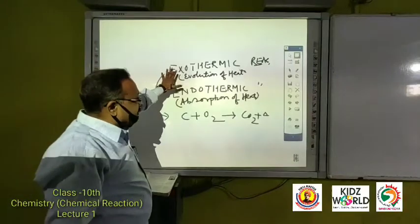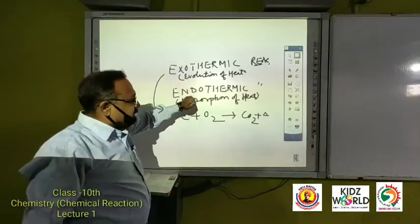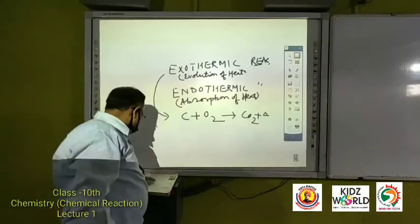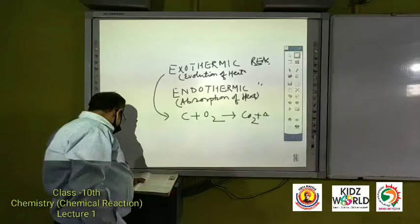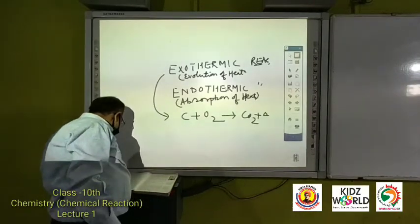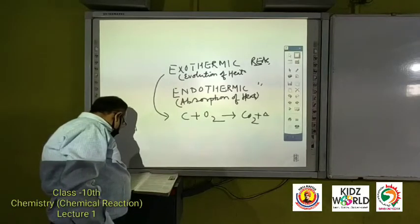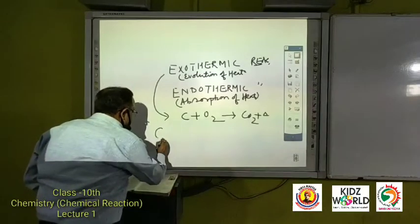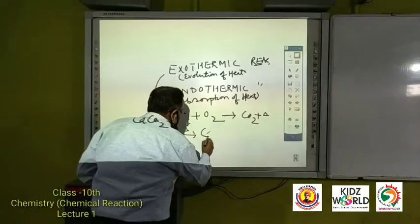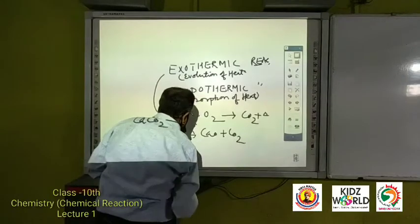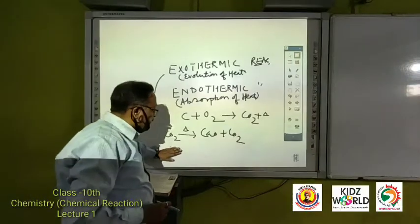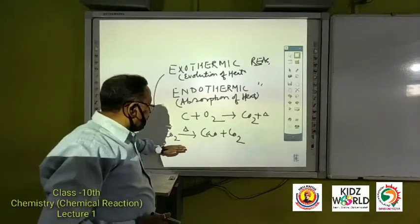Endothermic reaction, in this heat is absorbed. Very simple example is when you put glucose on your tongue, you feel coolness. Or when calcium carbonate is heated, it forms CaO plus CO2. In this we give heat, here it is absorbed, which is called endothermic.